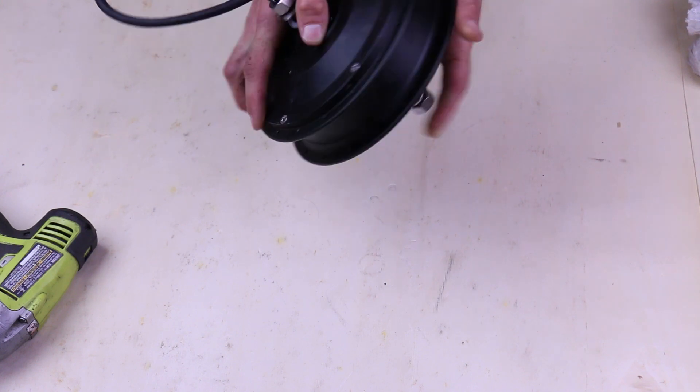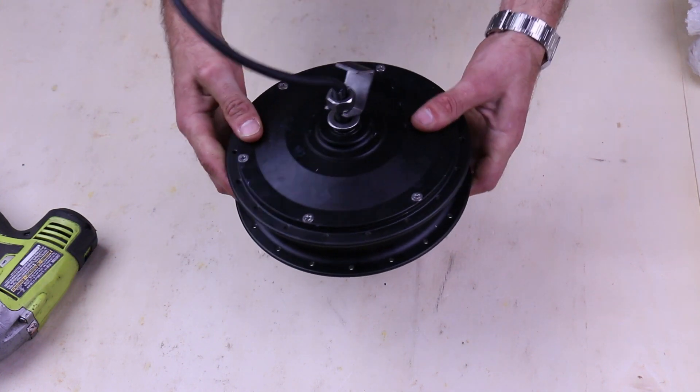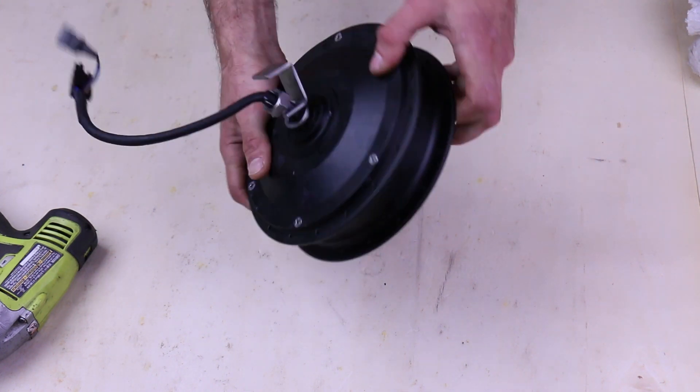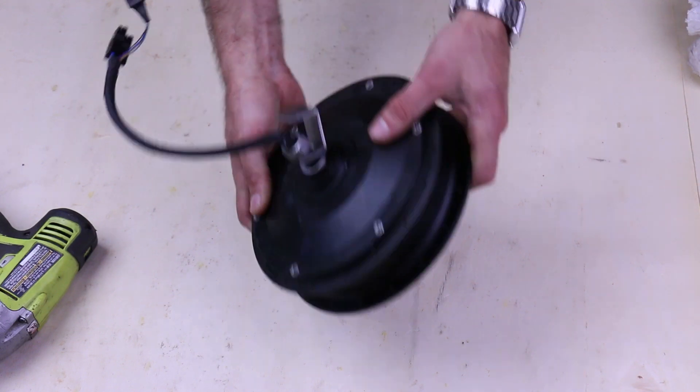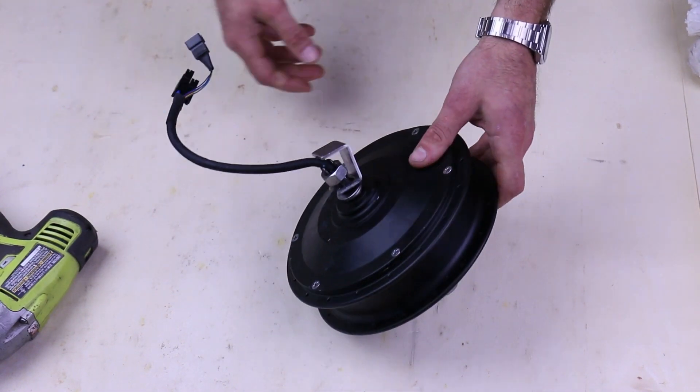So that's it. That's the quick video for disassembling and reassembling an eZee motor if you need to do service of some kind to it. We do have replacement bearings, freewheel assemblies, and connectors. Thanks for watching our eZee motor disassembly video.